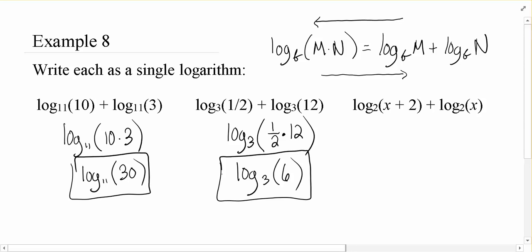And we can do this with variables as well. So these are both base 2 logarithms. So we could multiply x and x plus 2 together. And we could distribute the x across, giving us x squared plus 2x.